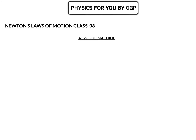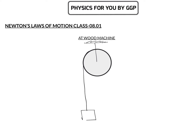Welcome to Newton's Laws of Motion Class 8, in which we'll discuss the Atwood machine. This Atwood machine is nothing but a single pulley system — a smooth, massless pulley with a string passing through it. One end of the string is connected to a block of mass m1 and the other end is connected to a block of mass m2.